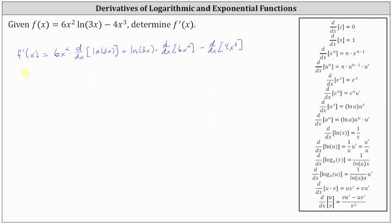Now let's find the derivatives. We have f prime of x equals six x squared. To differentiate natural log three x with respect to x, we need to apply the chain rule where the inner function u is equal to three x. The derivative of natural log u with respect to x is equal to one divided by u times u prime, which gives us one divided by three x times the derivative of three x with respect to x, which is three. Then we have plus natural log three x times the derivative of six x squared with respect to x, which is 12x. And then we have minus the derivative of four x cubed with respect to x, which is 12 x squared.